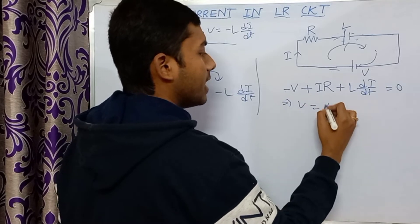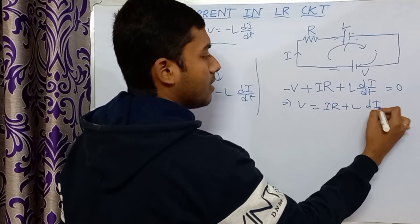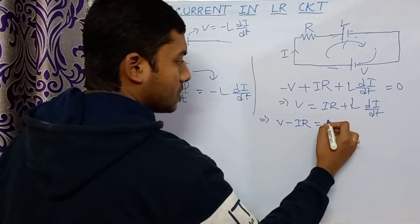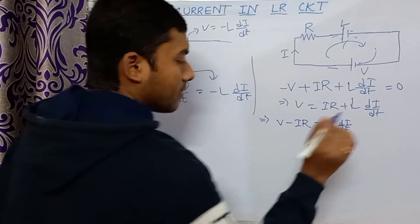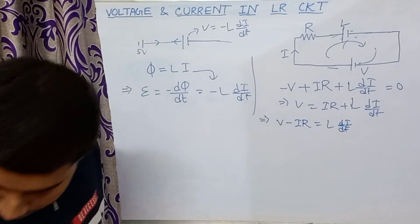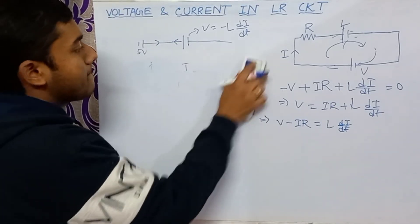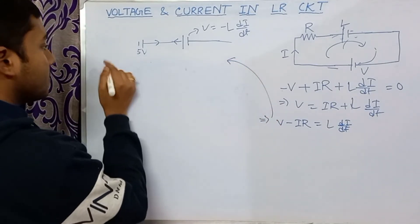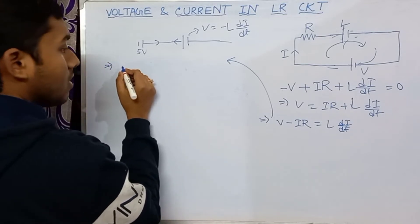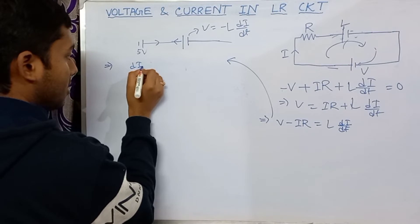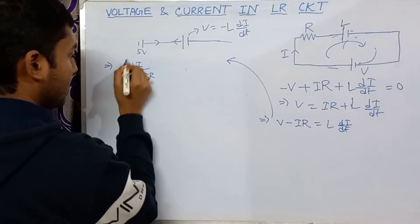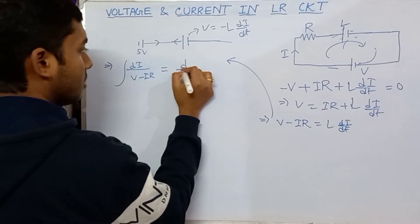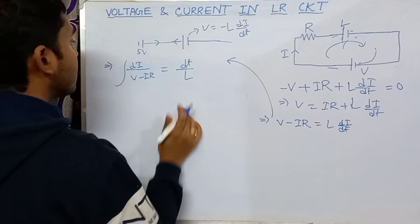That means V equals IR plus L di/dt. Rearranging it: V minus IR equals L di/dt. Separating variables, di divided by (V minus IR) equals dt divided by L. We set up the integration.